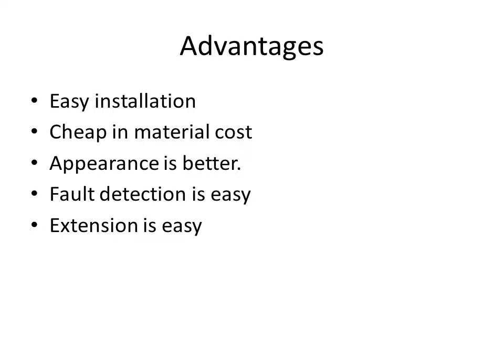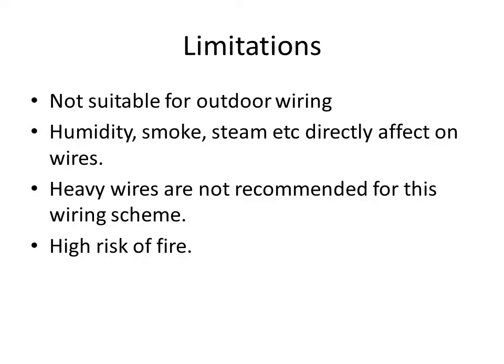Advantages of batten wiring: installation is easy, cheap in material cost, appearance is better compared to cleat wiring, fault detection is easy as wires are visible, and extension is easy. Limitations: not suitable for outdoor wiring as wires are exposed to weather and humidity, not recommended for heavy wires, and there is a high risk of fire.